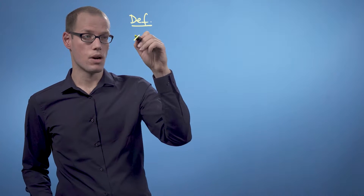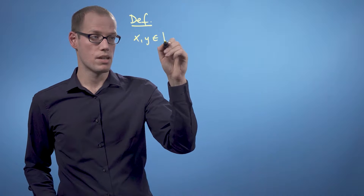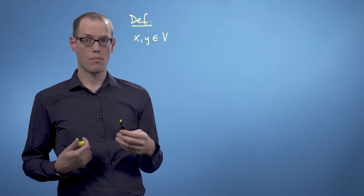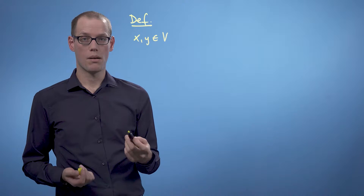An inner product is a generalization of the dot product but with the same idea in mind. We want to express geometric properties such as lengths and angles between vectors. Let's define what an inner product actually is. We are looking at two vectors — for any vectors x and y in a vector space V.